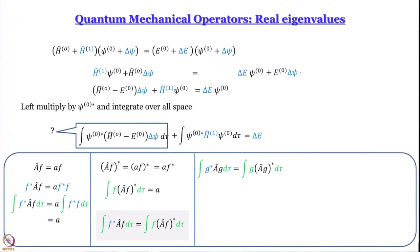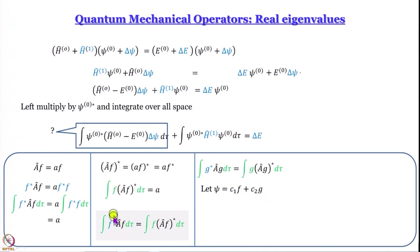Since we need a g, we write the same expression in terms of g — without loss of generality, it does not matter what you call the function, f or g or phi. Then, to bring in a different function, we take a linear combination psi = c1·f + c2·g. We do this because we want an integral of f* A-hat g d-tau, and this linear combination will enable us to do exactly that.